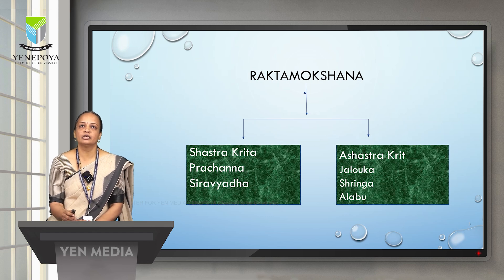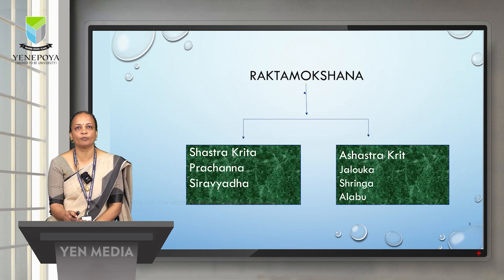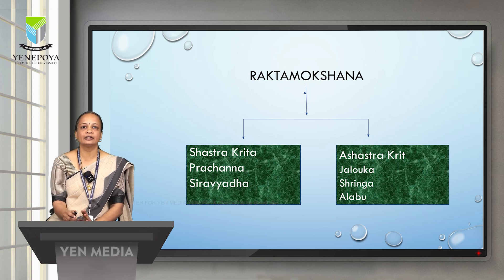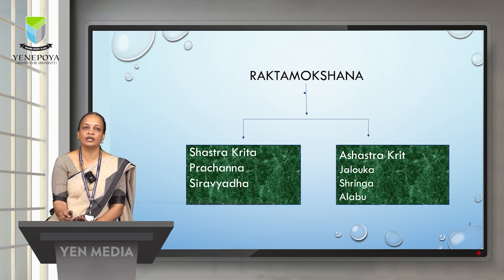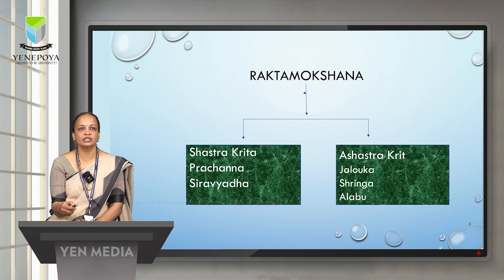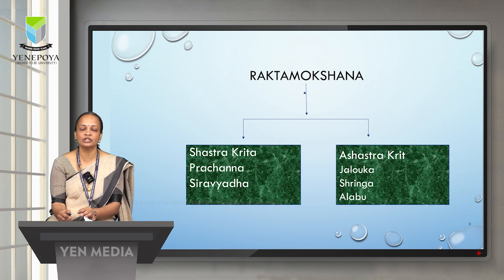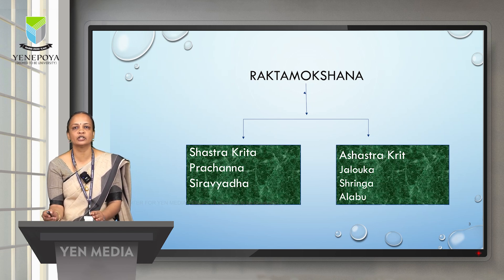Rakta Moksha is one of the Panchashodhana procedures adopted in Ayurveda — that is, the letting out of blood painlessly. It has two broad classifications: Shastrakruta, where blood is let out using instruments, and Ashastrakruta, where blood is let out without using instruments.